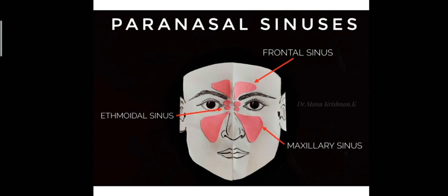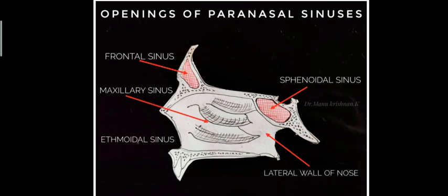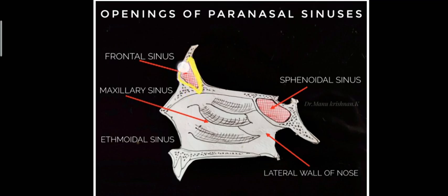Here is a visualization of the paranasal sinuses. You can see the frontal sinus, the maxillary sinus, and the small ethmoidal sinus lying within the ethmoidal labyrinth. This is a sagittal plane section so you can visualize the sphenoidal sinus, which lies deeper than the other sinuses. In this cross-sectional image, you can clearly see the sphenoidal sinus and the frontal sinus within their respective bones.